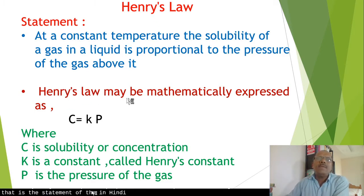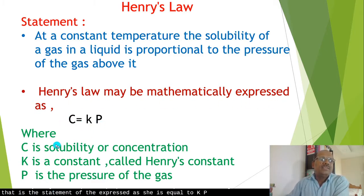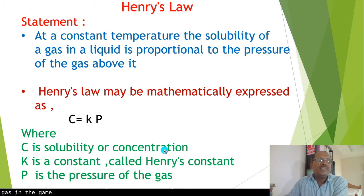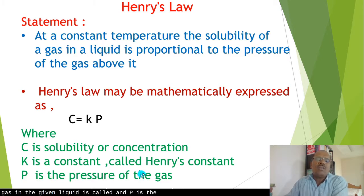Henry's law may be mathematically expressed as C = Kp, where C is the solubility or the concentration of the gas in the given liquid, K is a constant called Henry's constant, and P is the pressure of the gas.